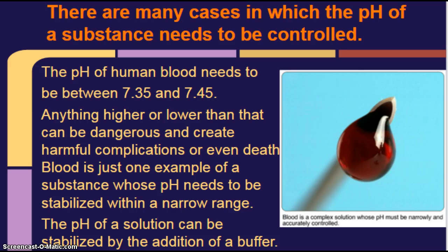There are many cases in which the pH of a substance needs to be controlled. For example, in your blood. Blood is a complex solution whose pH must be narrowly and accurately controlled. The pH of human blood needs to be between 7.35 and 7.45. Anything higher or lower than that can be dangerous and create harmful complications or even death. Blood is just one example of a substance whose pH needs to be stabilized within a narrow range.